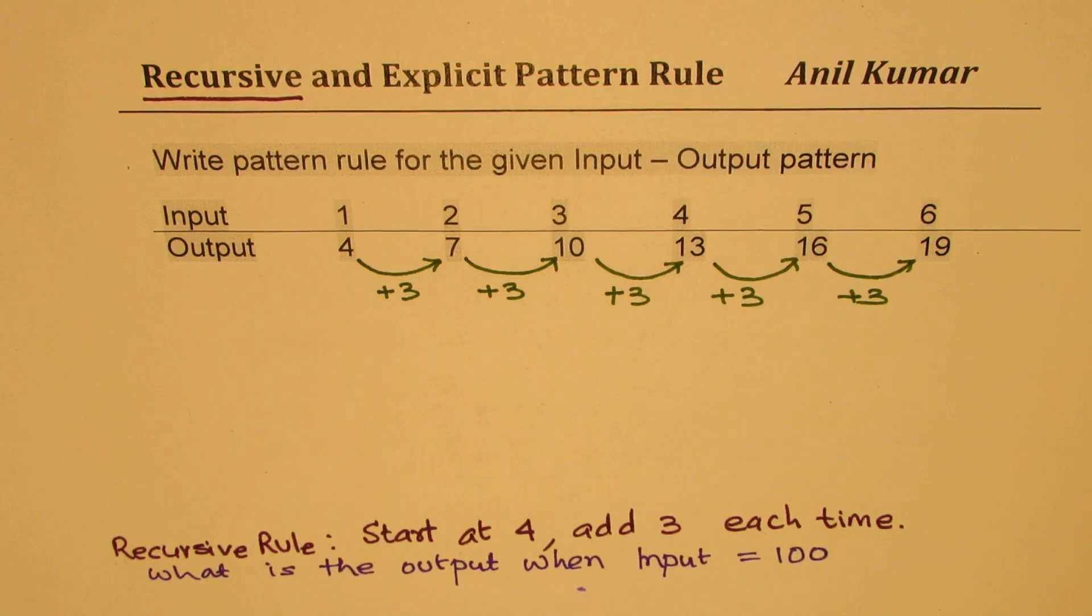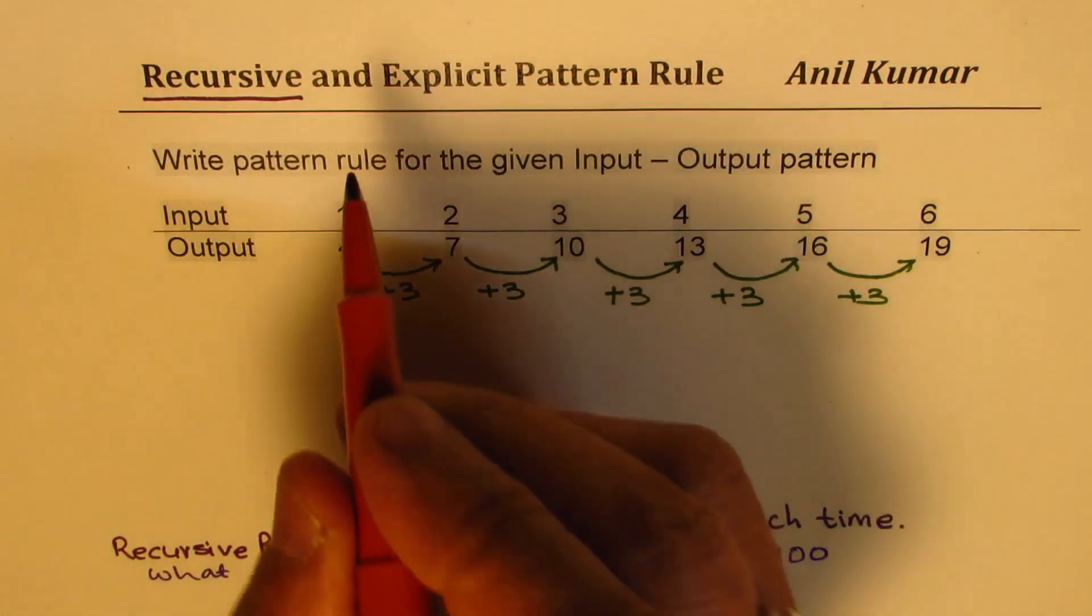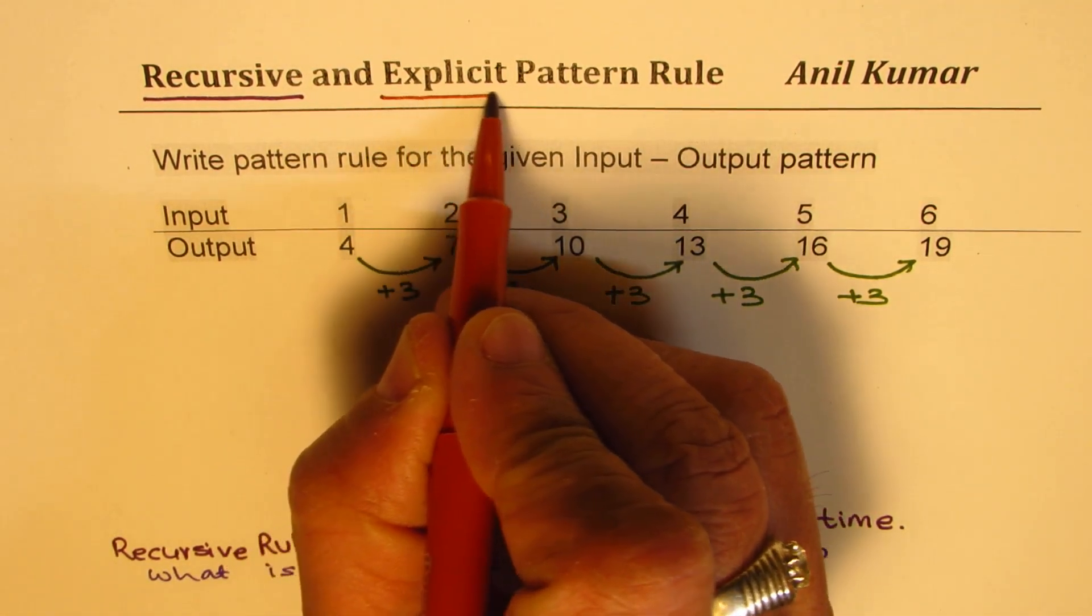So recursive rule is good enough when we are talking for some pattern rules extended to let's say 10 numbers. Now as soon as we are looking into more options then recursive rule has its limitation. So that's why we are coming up with a new type of a pattern rule which we are calling explicit pattern rule.